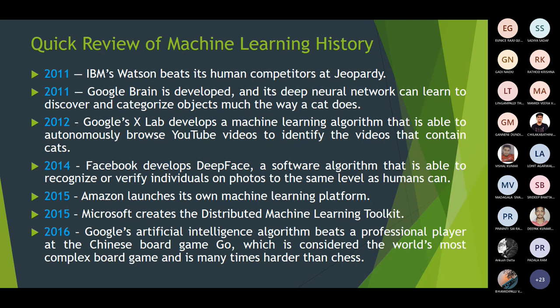In the year 2015, Microsoft created a distributed machine learning toolkit. In the year 2016, Google's artificial intelligence algorithm beat a professional player at the Chinese board game Go, which is a very intelligent game. Google's AI algorithm was able to beat a professional expert in this game.